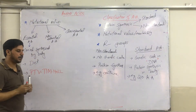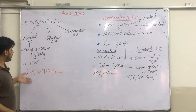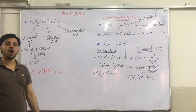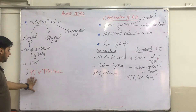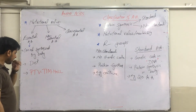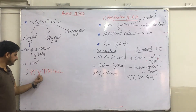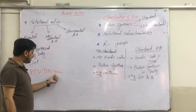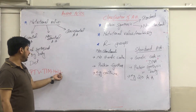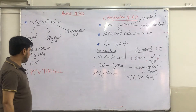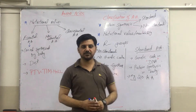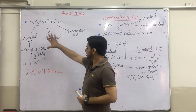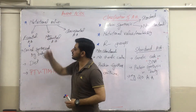PTV Tim Hall is a mnemonic to remember the essential amino acids — P for proline, T for tryptophan, V for valine, T for tyrosine, I for isoleucine, M for methionine, H for histidine, and L for leucine and isoleucine. This is a very easy mnemonic to remember these essential amino acids.